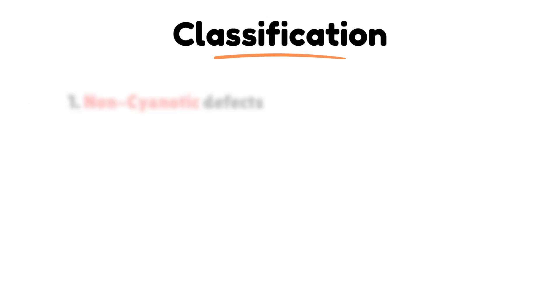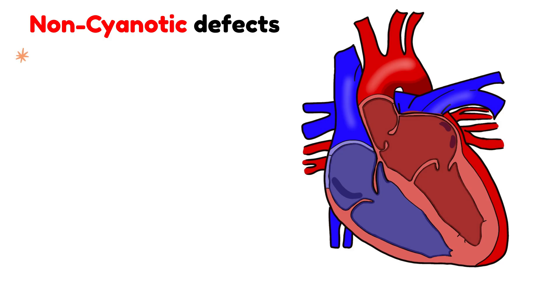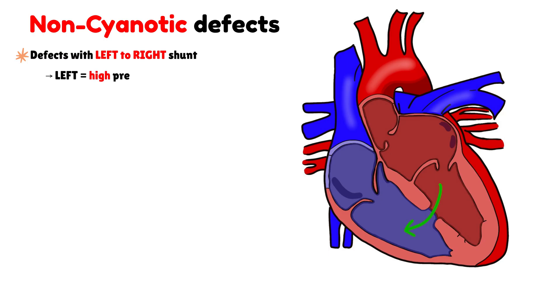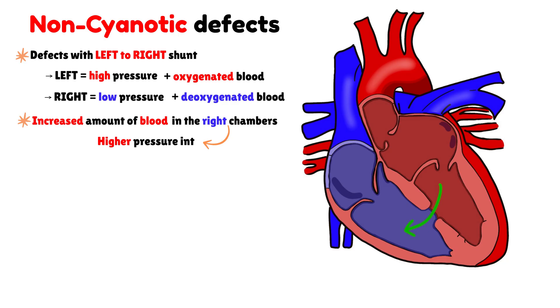Congenital heart diseases can be classified into two main categories: non-cyanotic and cyanotic defects. In the first group, the non-cyanotic congenital heart diseases, we typically find defects that create a left-to-right shunt. This means that blood moves from the left side of the heart, where the pressure is higher and the blood is oxygenated, to the right side, where the pressure is lower and the blood is deoxygenated. This abnormal communication causes an increased amount of blood to pass through the right heart chambers and into the pulmonary circulation. As a result, the pulmonary vessels are exposed to higher pressure than normal, eventually leading to pulmonary hypertension.